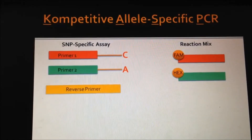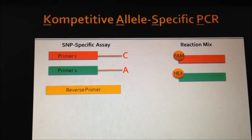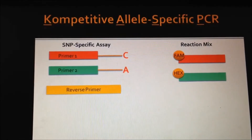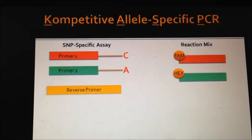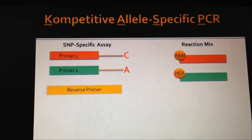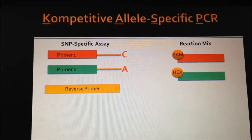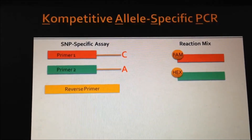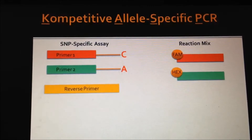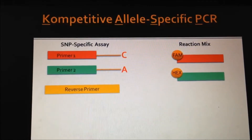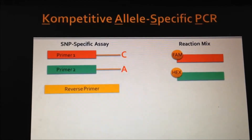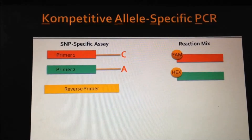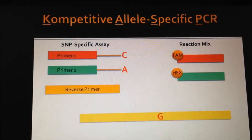The second component is the reaction mix, which contains TAQ polymerase necessary for PCR to proceed and the fluorescent reporting system. This system includes two oligos that are complementary to those 5' proprietary ends of the allele-specific primers and are each labeled on the 5' end with a fluorescent tag. One is labeled with FAM and the other with HEX. These fluorolabeled oligos are each bound to a 3' quencher to suppress the fluorescent signal until necessary.